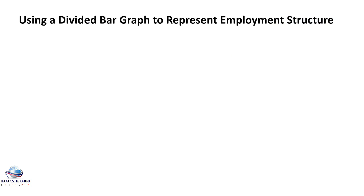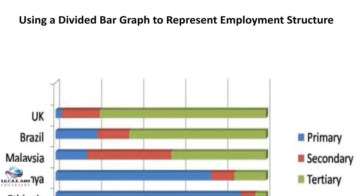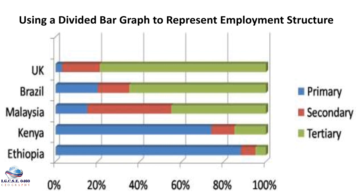Employment structure is not only represented on pie charts but also on divided bar graphs, also known as compound bar graphs. From this compound bar graph, Ethiopia — an LEDC — has a very large proportion of people in the primary sector (blue section), a very small secondary sector (red), and a small tertiary sector. Compared to the UK, an MEDC, the blue section is very small and the green tertiary section is very large.